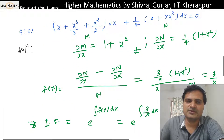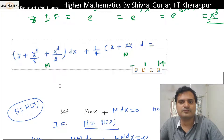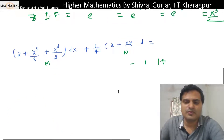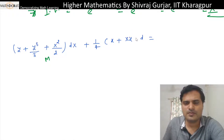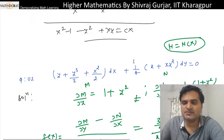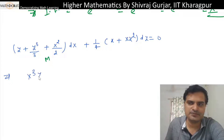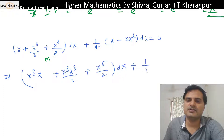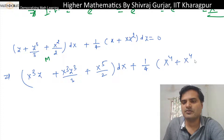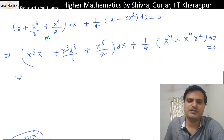So the integrating factor is e to the power of integral of (3/x) dx, which is e to the power 3 ln(x), which is nothing but x cubed. So x cubed is the integrating factor. Now multiply the equation throughout by x cubed. This gives terms including x cubed times (x plus xy squared) dy.